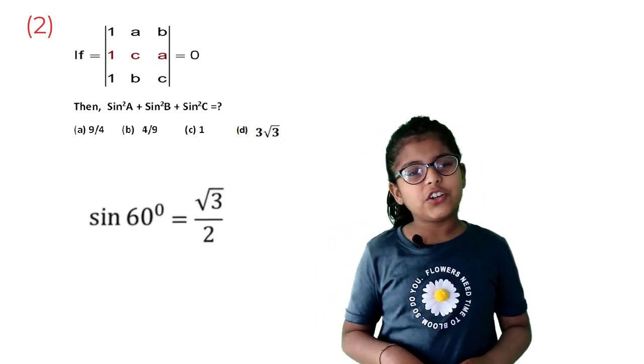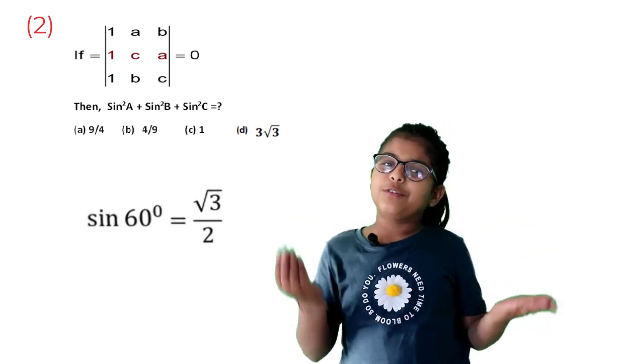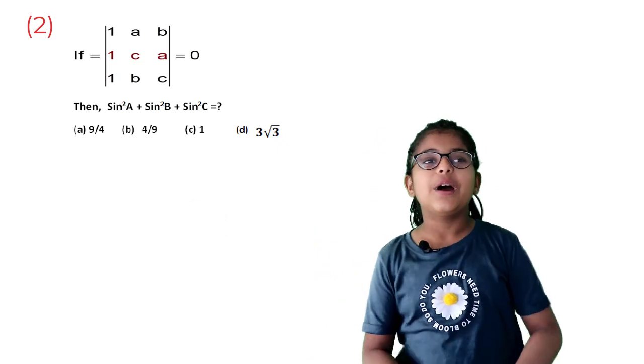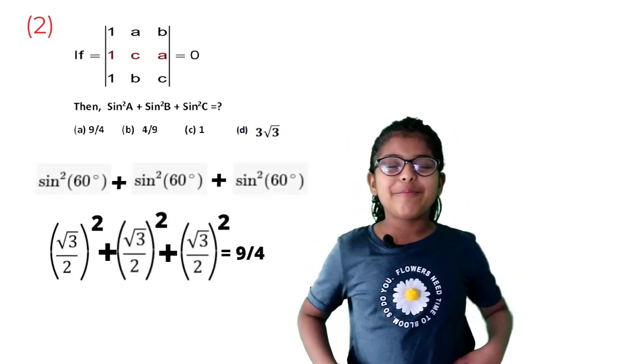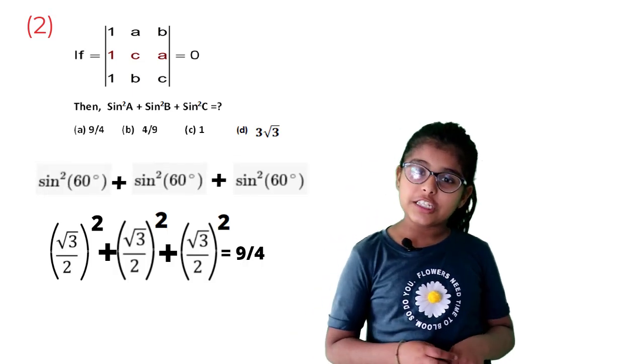As we know, sin 60° = √3/2. After simplification, we get 9/4. The correct choice is A.